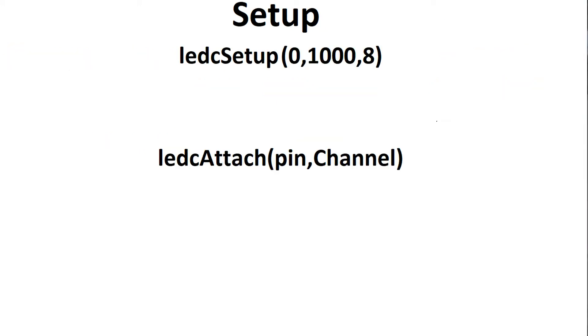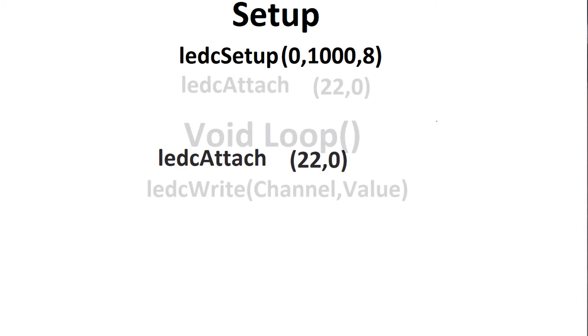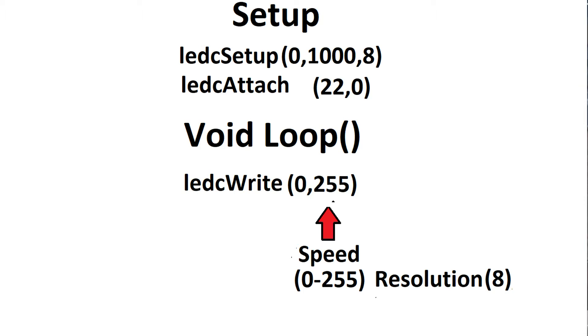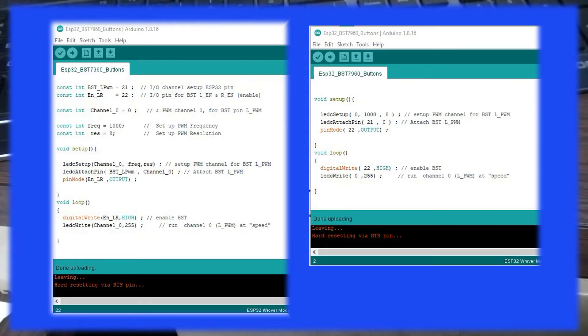With LEDC attach we assign a pin to the channel. This is the only time we refer to the pin. From now on we'll refer to the channel. To output the signal we use LEDC write with the channel and the value. With the value being based on the resolution we picked earlier. In this case resolution 8 and 0 to 255. And here's a simple sketch.